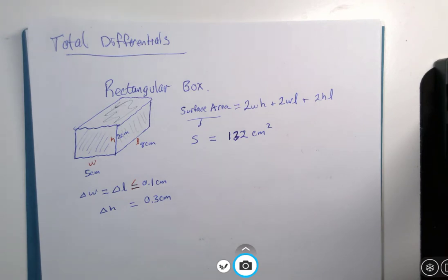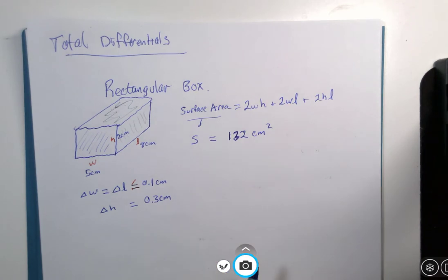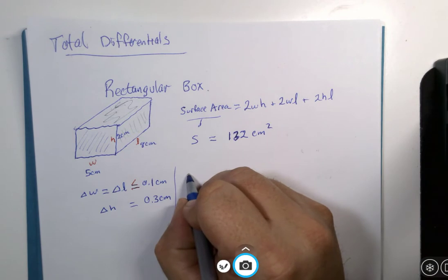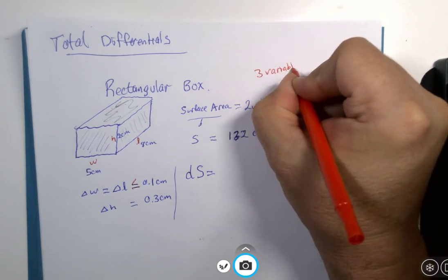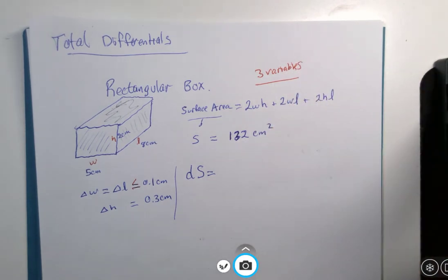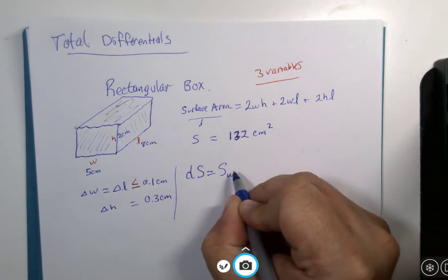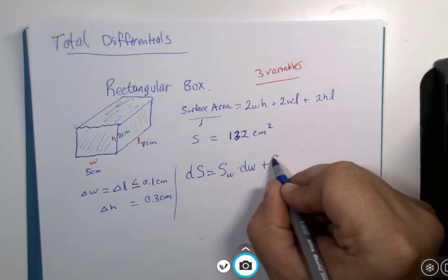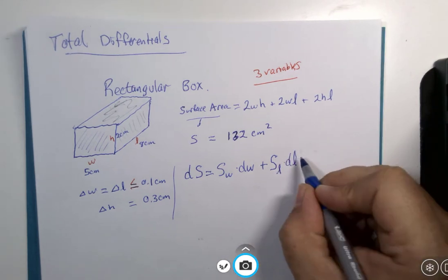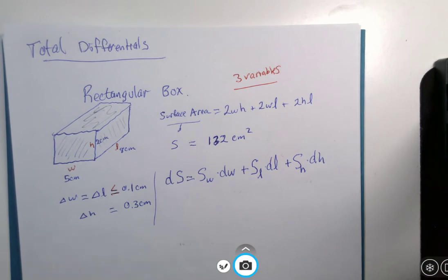Our question is, is how accurate is the surface area if we take into consideration these approximations? So, to do this, what we need to do is find the approximate change in surface area. And there are three variables. So we have three variables at stake here. We need to find the derivative of the surface area with respect to W times DW, find the partial derivative of the surface area with respect to length times DL, and then find the partial derivative of the surface area with respect to height times DH. Three variable case.